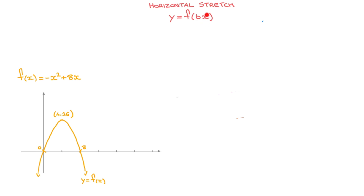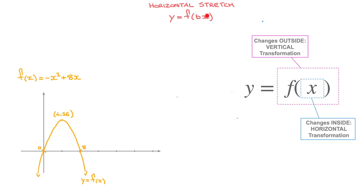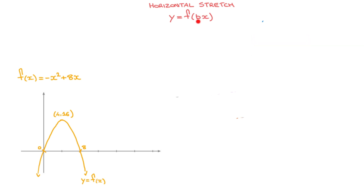We can tell this is a horizontal transformation because we're modifying the function's input — what's inside the parentheses of f of x. As soon as we change anything inside these parentheses, we're dealing with a horizontal transformation. Furthermore, we can tell that we're dealing with a stretch because this number b is multiplying x, as opposed to being added to it or subtracted from it. So this is a horizontal stretch.